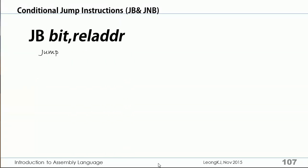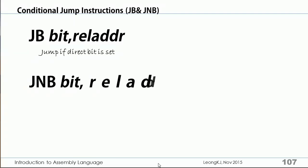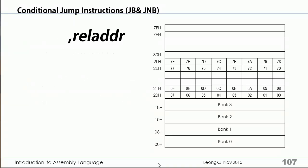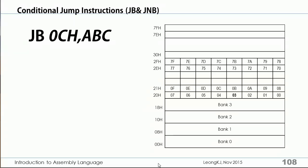JB is jump bit — jump if a direct bit is set. JNB is jump not bit — jump if a direct bit is not set. Direct bit refers to the bit-addressable location in data memory. For example, JB 0Ch, ABC will cause a program jump to ABC if the bit at bit location 0h is a one.